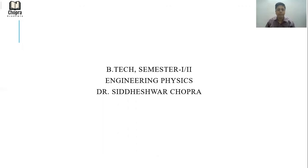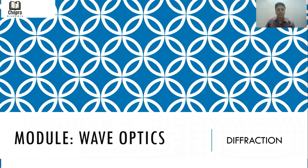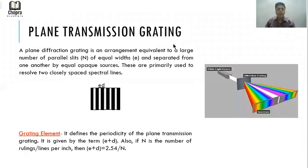What is a plane transmission grating? A plane transmission grating is an arrangement equivalent to a large number of parallel slits of equal widths and separated from one another by equal opaque sources. These are primarily used to resolve two closely spaced spectral lines.